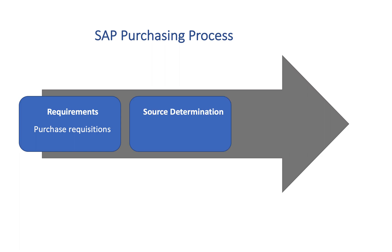Next, the purchasing group determines which supplier is the best option to purchase from. This is called source determination. Potential suppliers are identified based on past orders and any existing purchasing agreements. Then requests for quotations are sent to suppliers. Suppliers answer these requests for quotations and outline the conditions of a potential order. The supplier with the best offer is chosen.